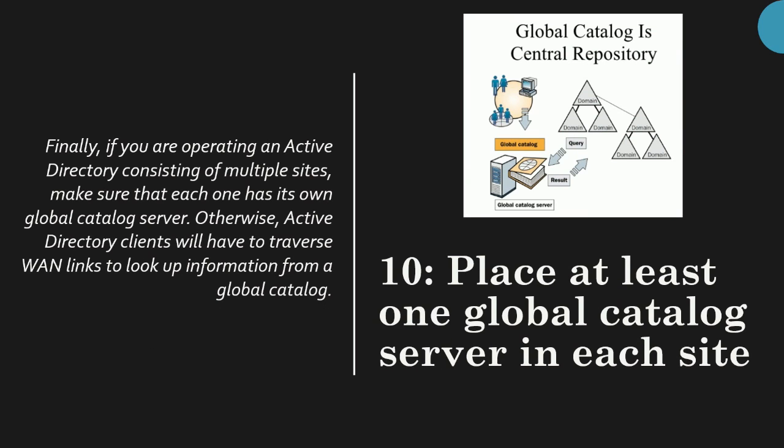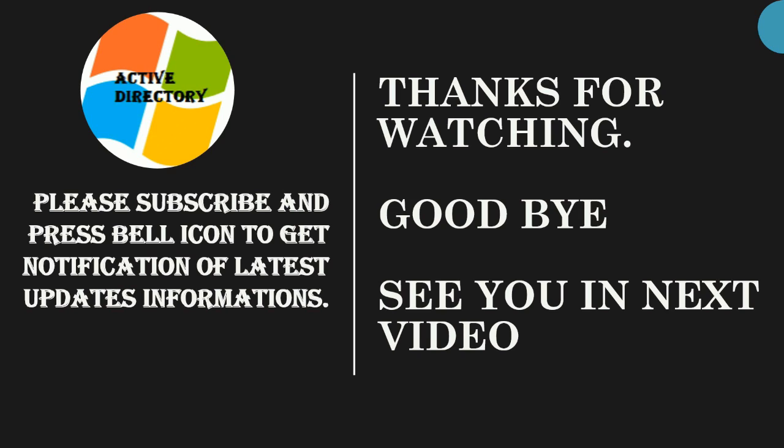Tip number ten: place at least one global catalog server in each site. Finally, if you are operating an Active Directory consisting of multiple sites, make sure that each one has its own global catalog server. Otherwise, Active Directory clients will have to traverse WAN links to look up information from a global catalog. Thanks for watching — please subscribe and press the bell icon to get notifications of the latest updates. Goodbye, see you in the next video.